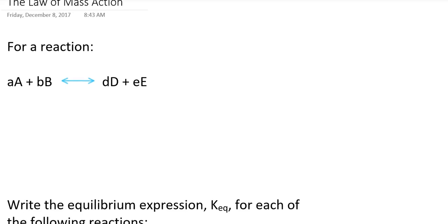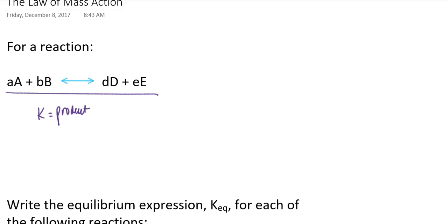Suppose I have this generic chemical process where I have A moles of reactant A reacting with B moles of reactant B, and that is in equilibrium with D moles of product D and E moles of product E. The way to construct the equilibrium constant is to put products over reactants. We're going to take the molar concentration of each product and raise it to the exponential power that corresponds to the stoichiometric coefficient of that product. So it would be the molar concentration of product D to the D power, the molar concentration of E to the E power.